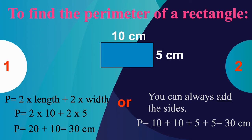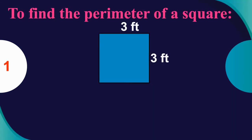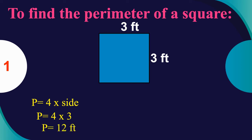When a shape has an unknown side, we use the length of the side that's parallel or opposite to it — so we add an extra 10 and an extra 5 in this case. Now let's look at how to find the perimeter of a square. We can multiply 4 times each side. Each side equals 3, so 4 × 3 = 12 — the perimeter of this square is 12 feet.